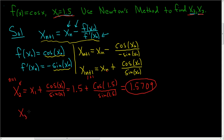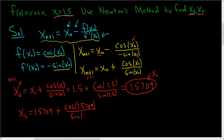Now we can find x₃. So x₃: we plug x₂ back into the formula. x₂ is 1.5709, so we have 1.5709 plus cosine 1.5709 over sine of 1.5709. If you put this in your calculator, make sure it's in radians — you get 1.5708. And that's x₃.